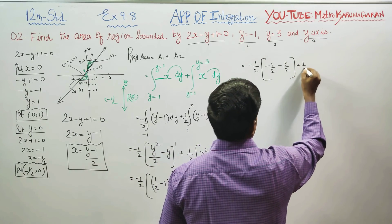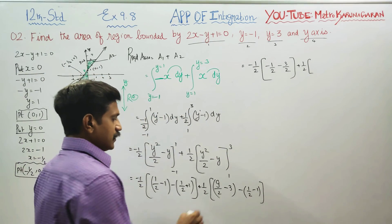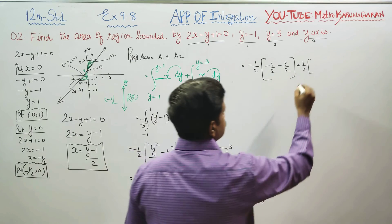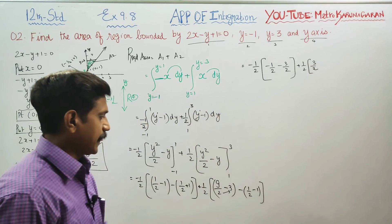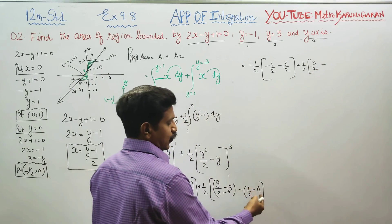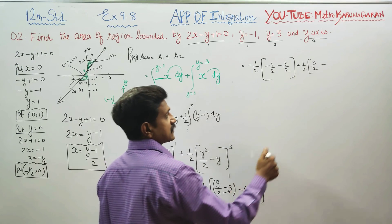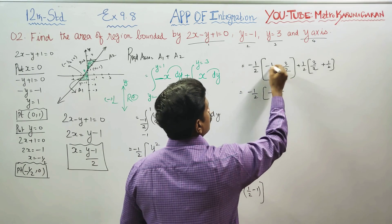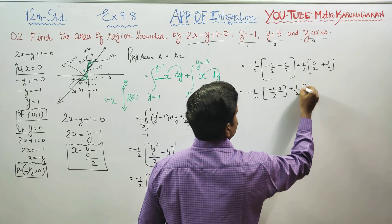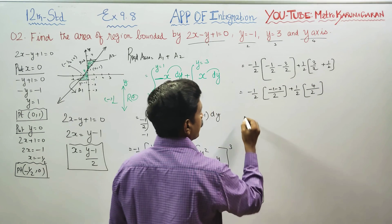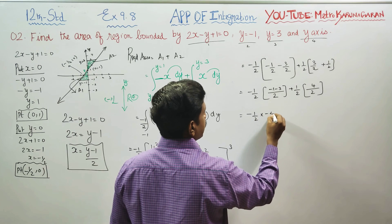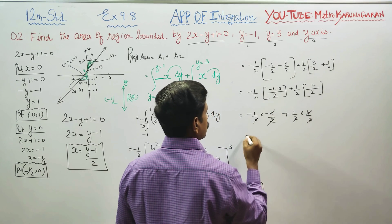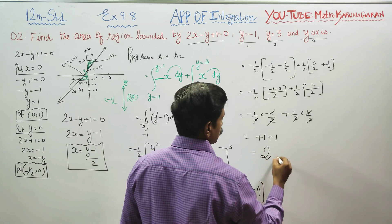Plus 1 by 2. Cross-multiplying, 3 twos are 6, so 9 minus 6 is 3 by 2. Then, 1 minus half is minus half, which becomes plus half. LCM is 2: minus 1 minus 3 gives minus 4 by 2, and 3 plus 1 is 4, giving 4 by 2. So minus 1 by 2 times minus 4 by 2, plus 1 by 2 times 4 by 2. Two twos are 4. Minus into minus is plus 1, plus 1 again, giving 2 square units.